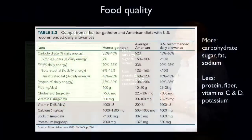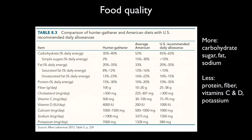If we look at food quality and compare the diets of hunter-gatherers with average Americans and with the U.S. recommended daily allowance, we see that hunter-gatherers had less carbohydrate, less sugar, less fat, and less sodium. Our food quality compared to hunter-gatherers also has less protein, fiber, vitamin C and D, and potassium. Hunter-gatherers were getting a reasonable amount of fat in their diet, but it was less saturated fat. They had considerably more fiber, a lot more potassium, and a lot less sodium — all things that are feeding into mismatched diseases.